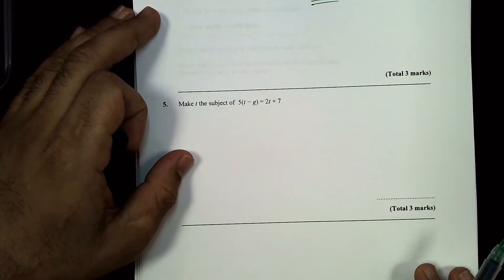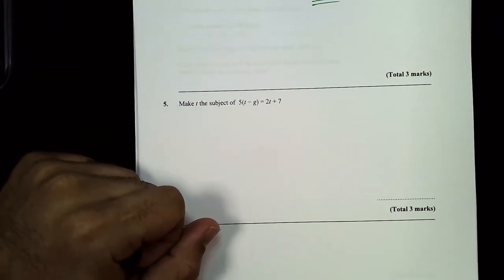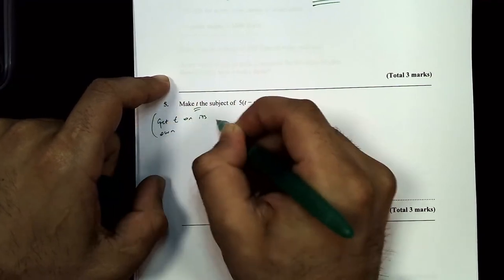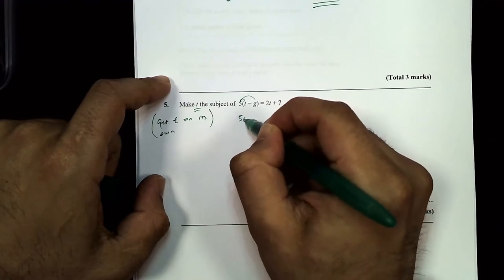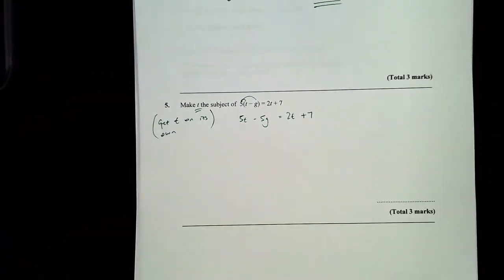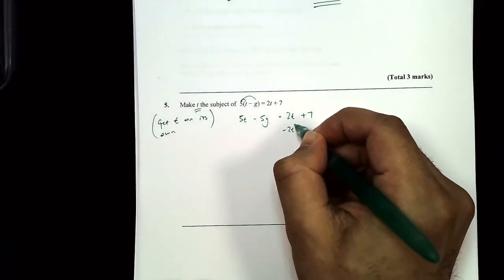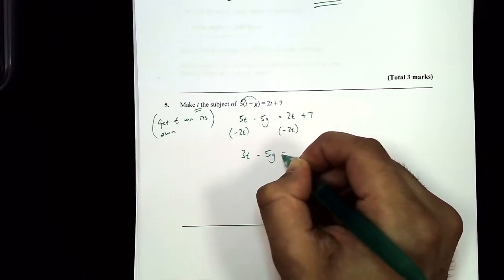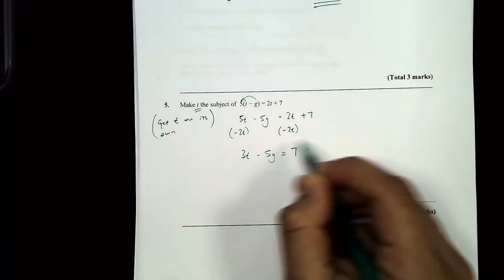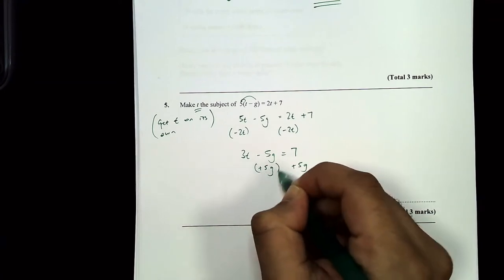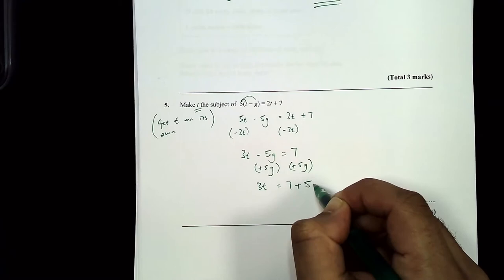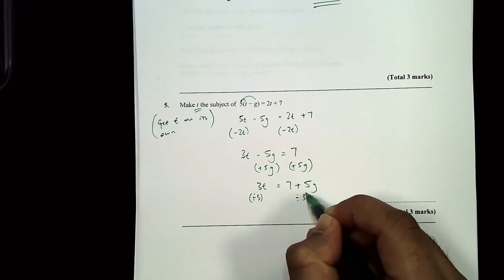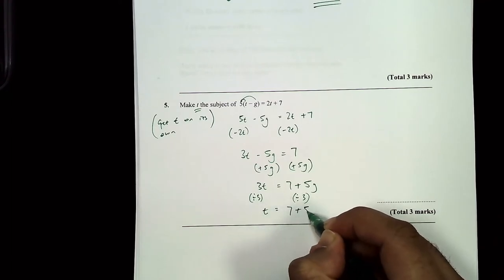Question 5: make t the subject of 5(t − g) = 2t + 7. Expand the bracket first: 5t − 5g = 2t + 7. Bring the t's to one side by subtracting 2t from both sides: 3t − 5g = 7. Add 5g to both sides: 3t = 7 + 5g. Finally, divide by 3 to get t on its own.